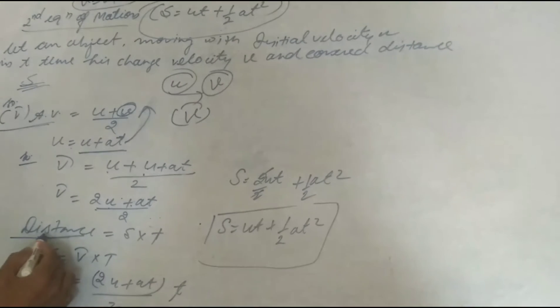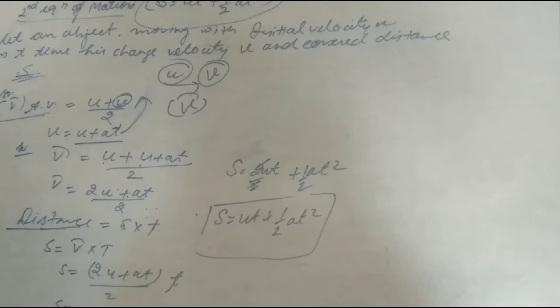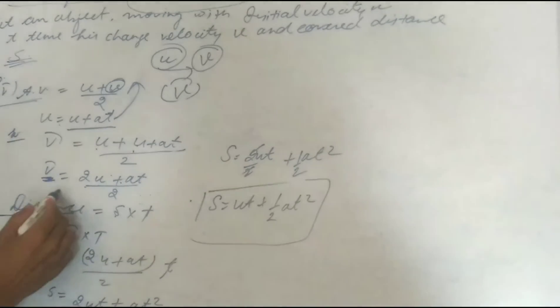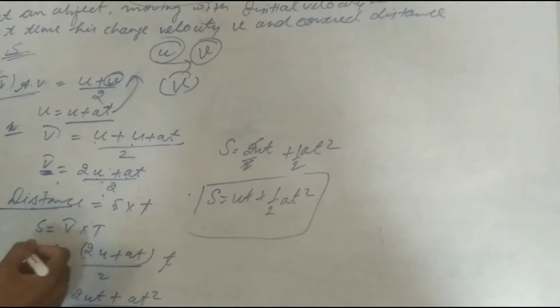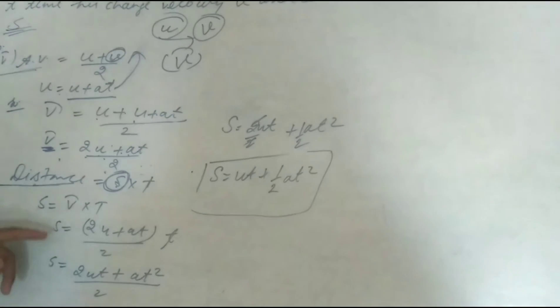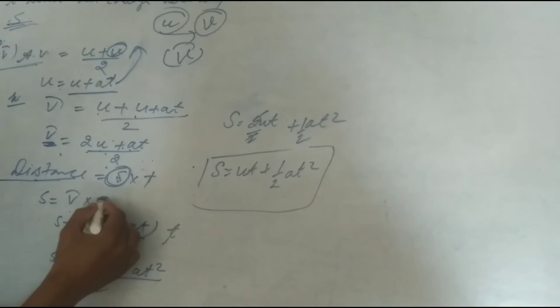Now we know, distance equal to speed into time. What is speed into time? So speed is given here, velocity v bar, 2u plus at upon 2. So we put here, speed is average velocity. So v bar into t, t is time taken.